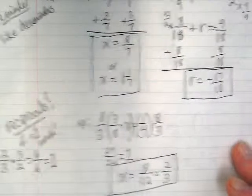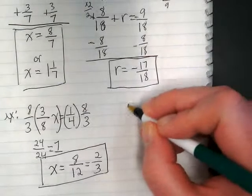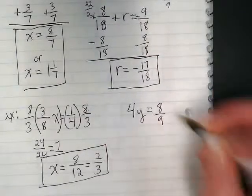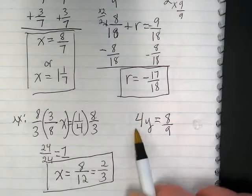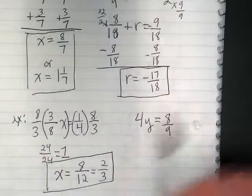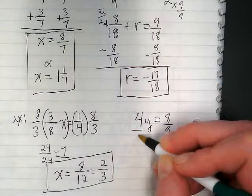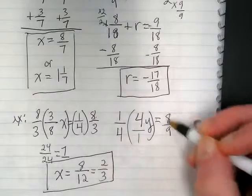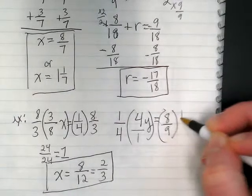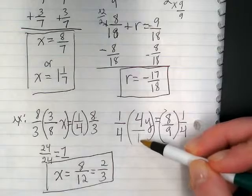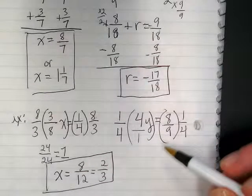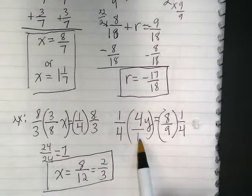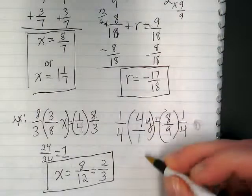We're going to do one more example together, where we have a whole number with the variable, 4y equals 8 9ths. This time when we're looking for the reciprocal, we're looking for the reciprocal of 4, and 4 has its invisible 1 there, meaning that its reciprocal is going to be 1 over 4. Remembering that all whole numbers have an invisible 1 underneath them, meaning 4 over 1. So we do 1 times 4 is 4. 4 times 1 is 4. We make it an invisible 1 with the y.